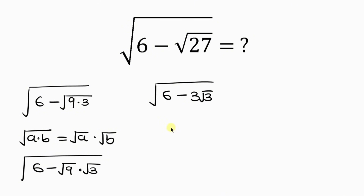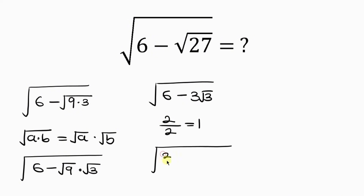Our next step will be to apply a little trick, because I am interested in making what is inside these square roots a perfect square in order to cancel out the square root. I know that 2 divided by 2 is equal to 1, so I am going to apply this here. This will be the square root of 2 divided by 2, which is 1, times 6 minus 3 root 3.